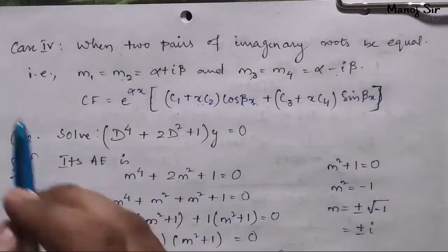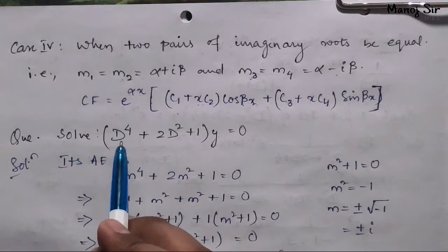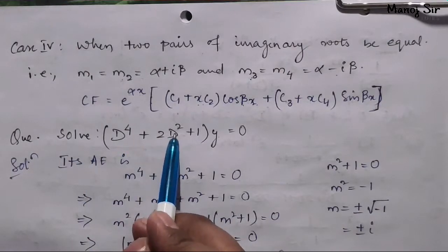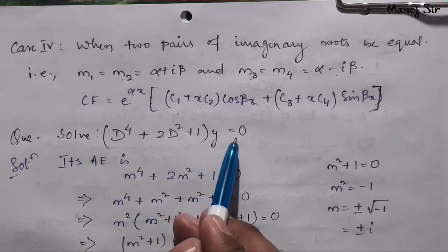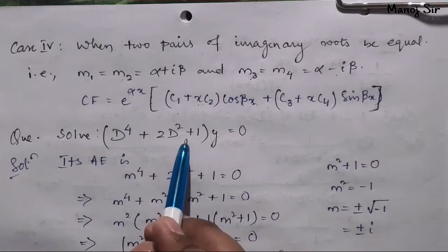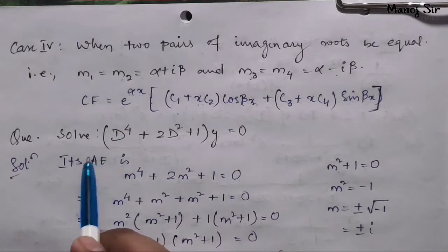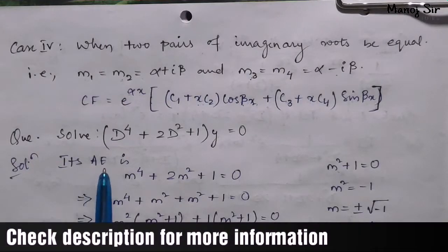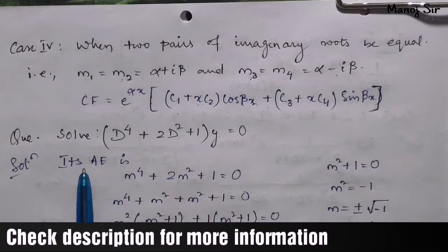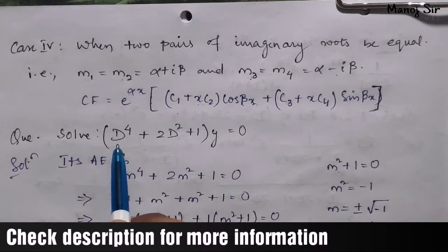Let us solve a problem belonging to this case. Solve: (D⁴ + 2D² + 1)·y = 0. You can see the given equation is already in symbolic form, so we need to find the auxiliary equation directly.